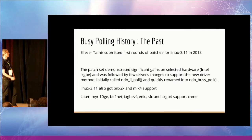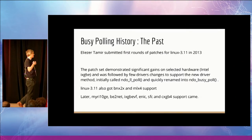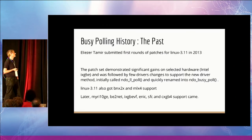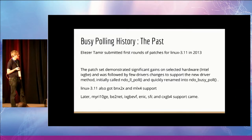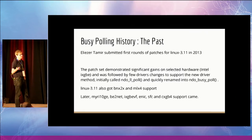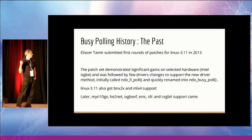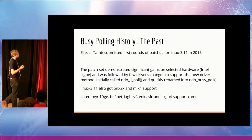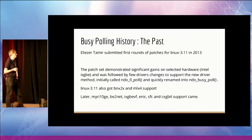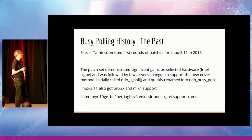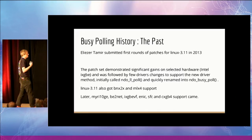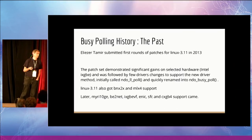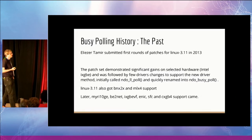The history started in 2012, thanks to Jesse. The patch was submitted in Linux 3.11 in 2013. The patch set gave good results, but only for three NICs: IGBE, Broadcom BNX2X, and ixgbe. Later, other drivers were added. At that time, busy polling started adding a new NDO operation in every driver, and that made the whole adoption of busy polling quite slow because every driver vendor had to add this support. Busy polling was tested for TCP and connected UDP sockets, and at that time only the standard receive system call, poll, and select were supported.